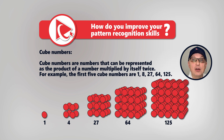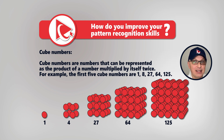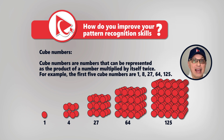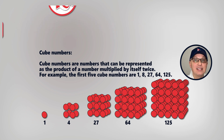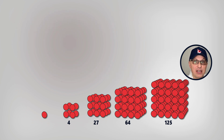Because 1 cubed is 1, 2 cubed is 8, 3 cubed is 27, 4 cubed is 64, and 5 cubed is 125.